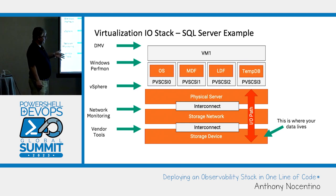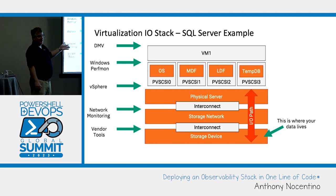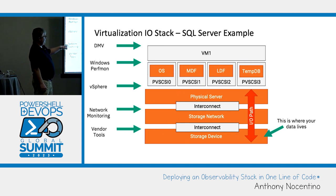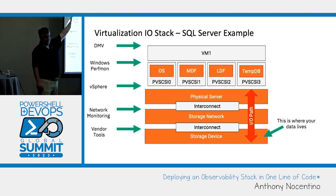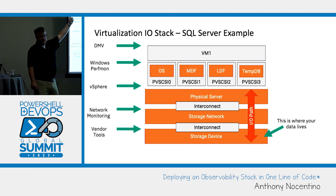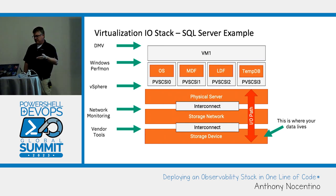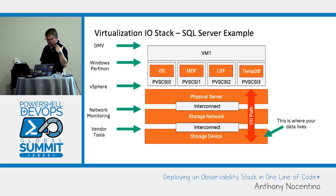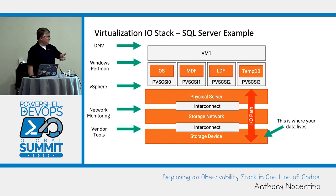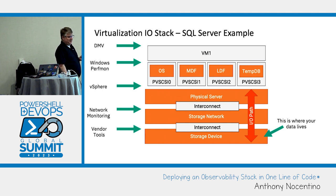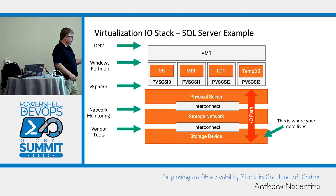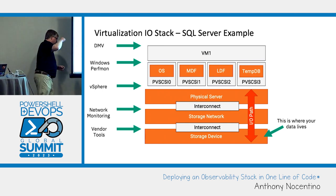I want to be able to paint a picture of where the performance bottleneck is in this stack. That's a lot of stuff managed by different teams — the database team, the VMware team, the networking team, the storage team. So that's a lot of people who have to expose their systems for others to monitor, which means looking behind the curtain.